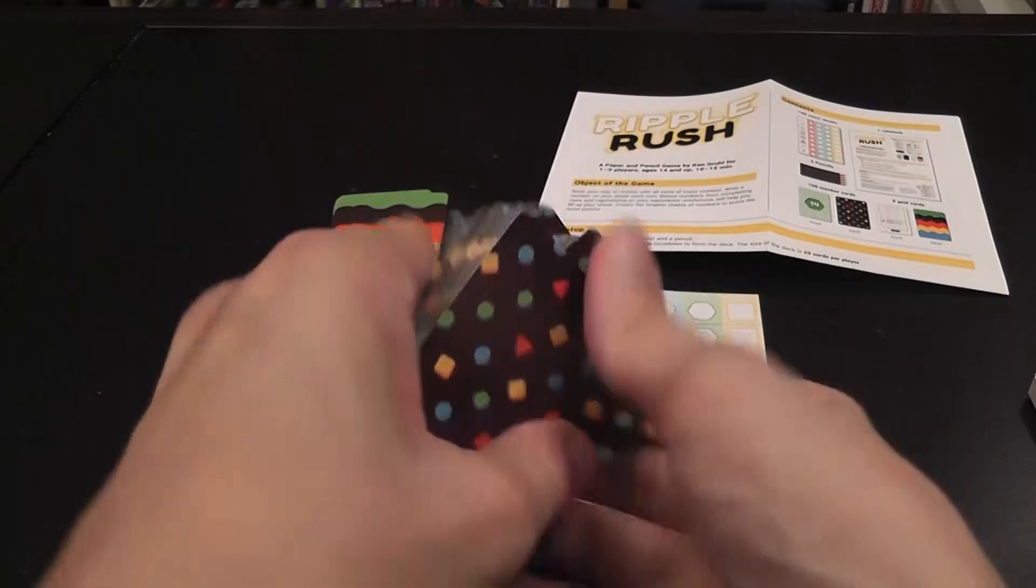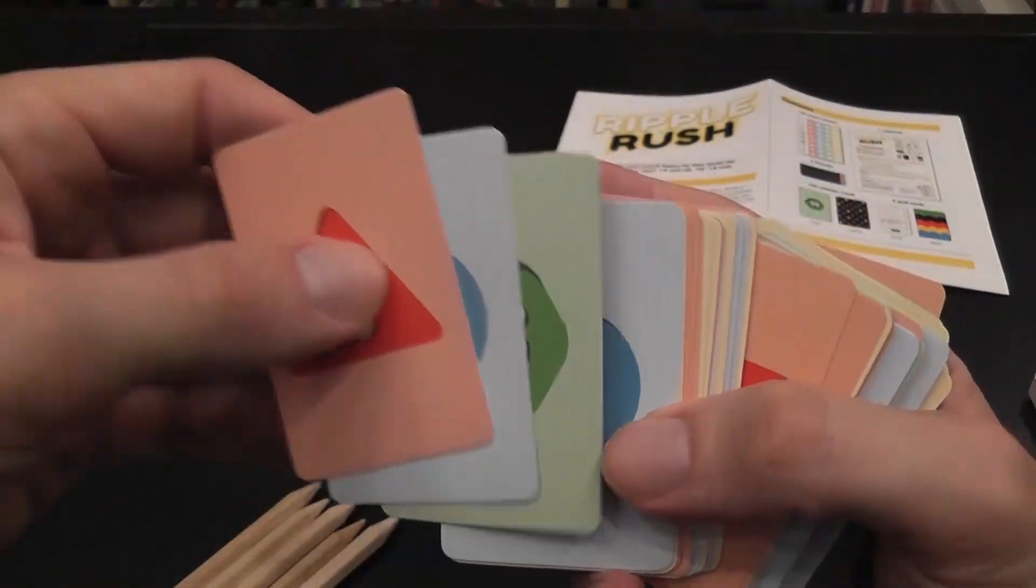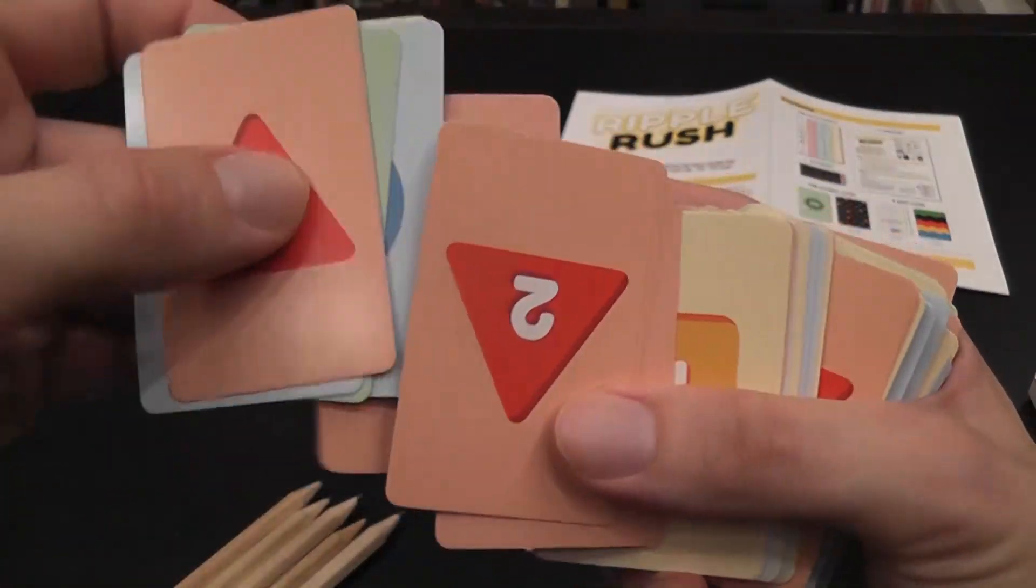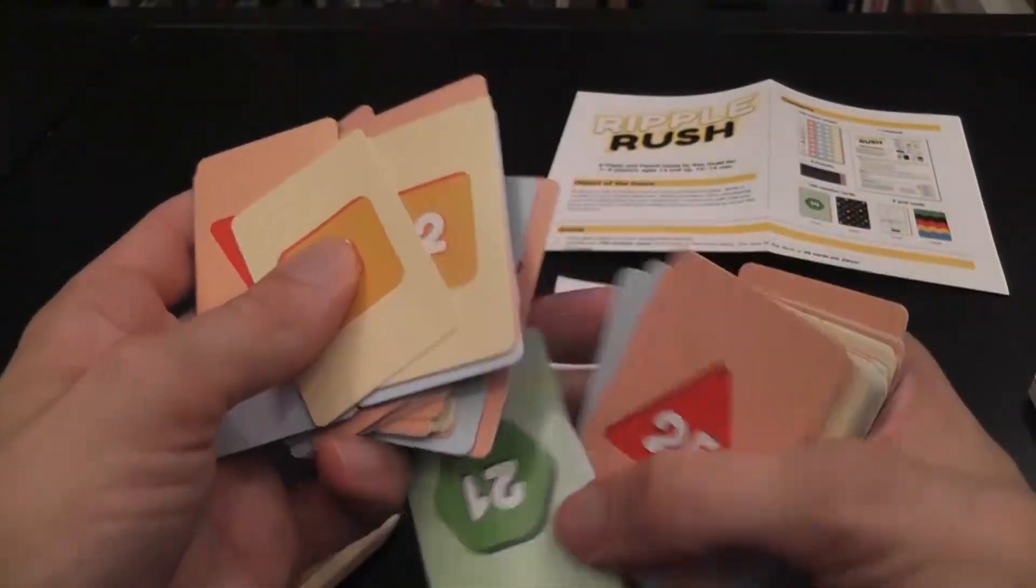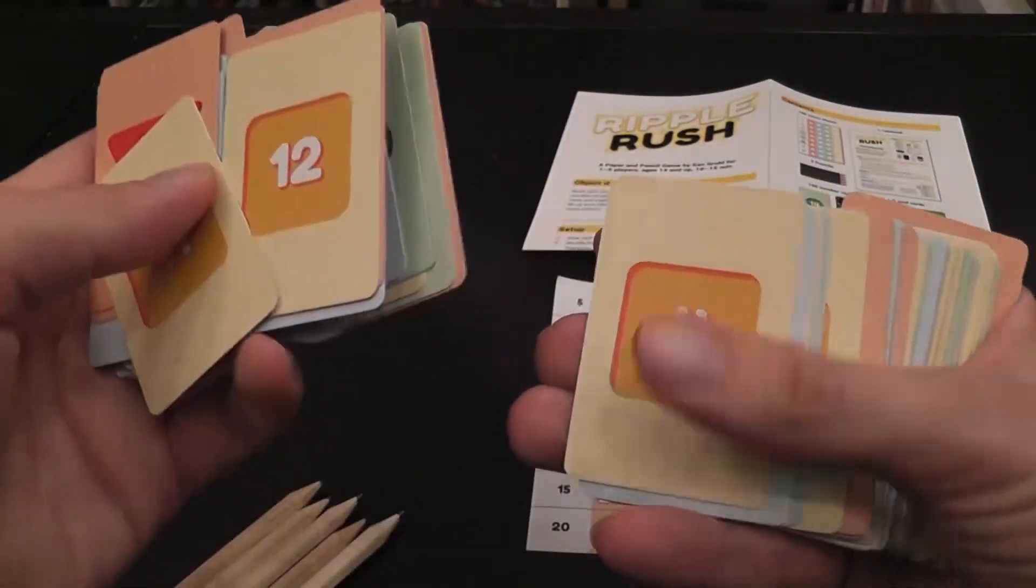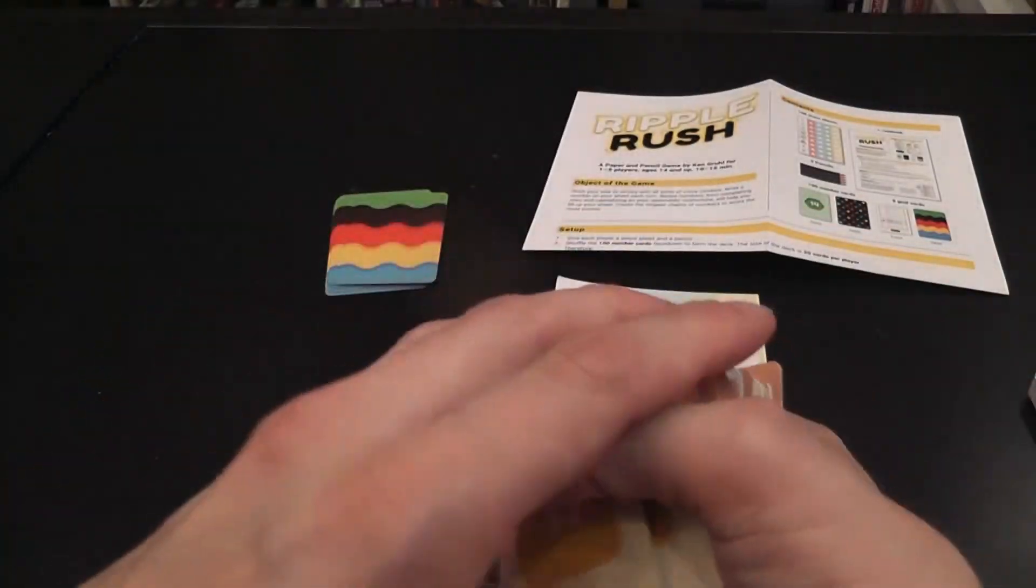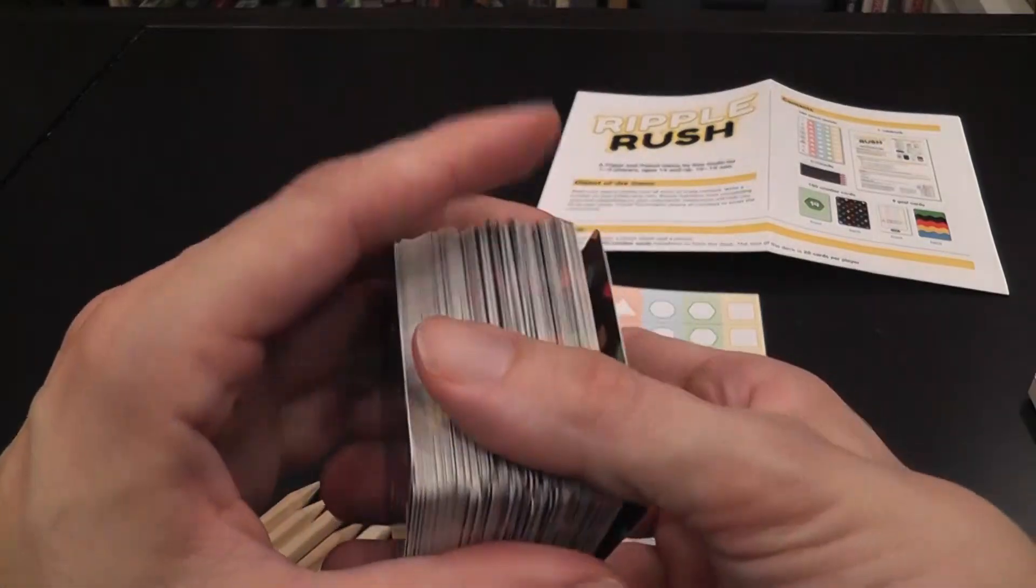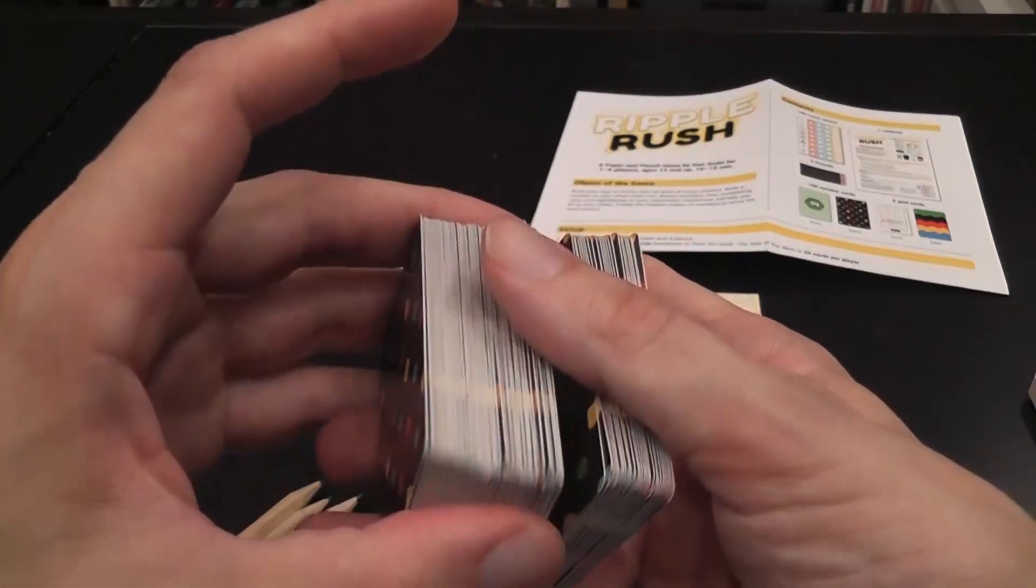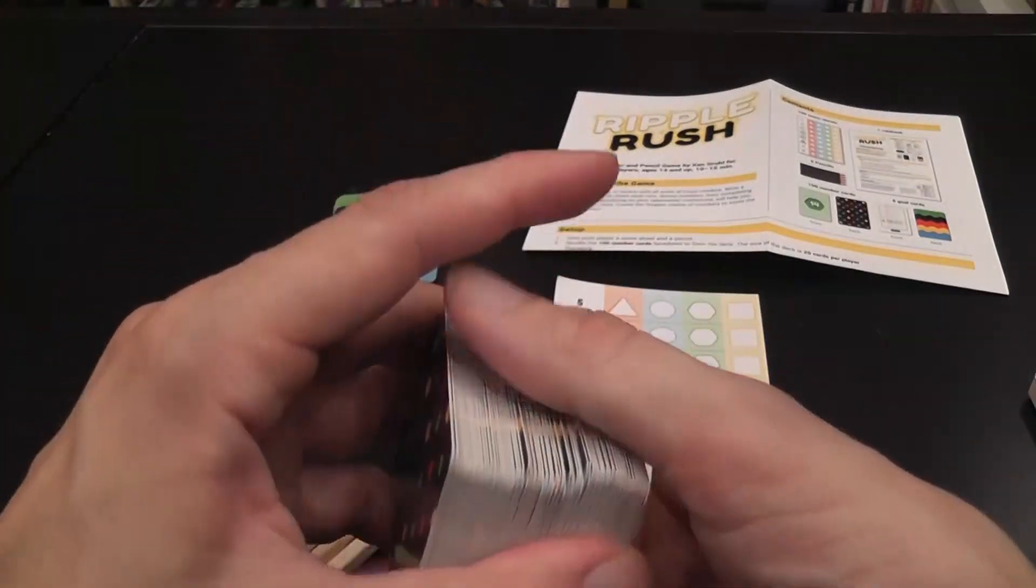So you have a deck of cards representing numbers in different suits, as indicated by shape and color, as simple as that. These numbers go from 1 to 25. You shuffle the deck, and then you remove a number of cards, depending on the number of players. So fewer players means leaner decks.